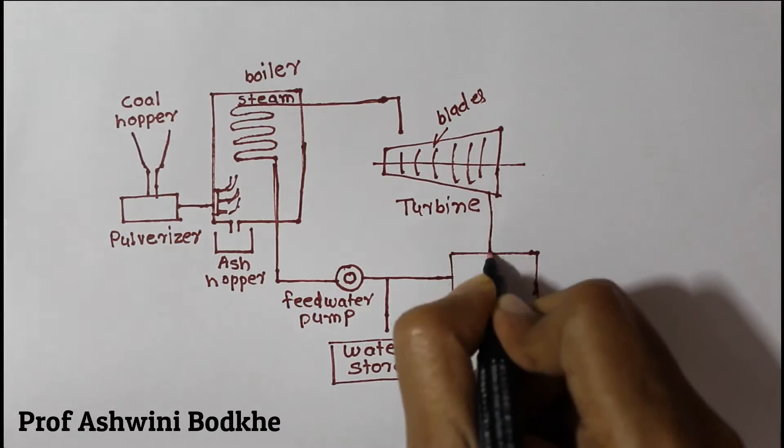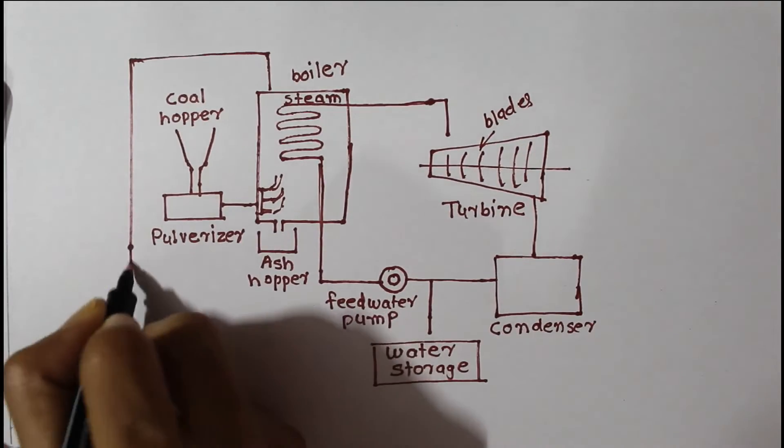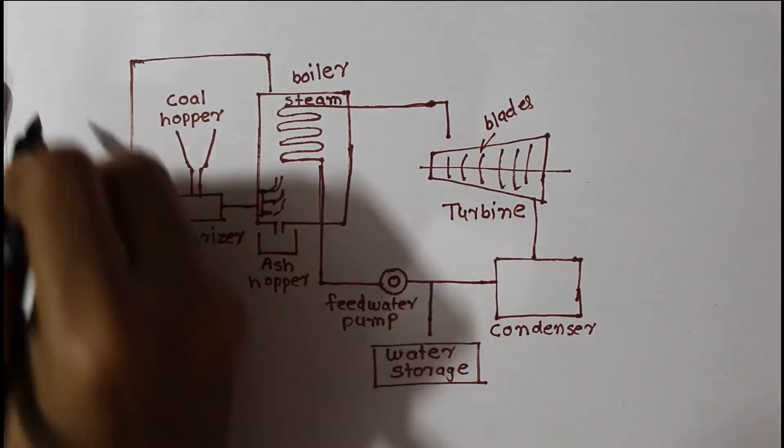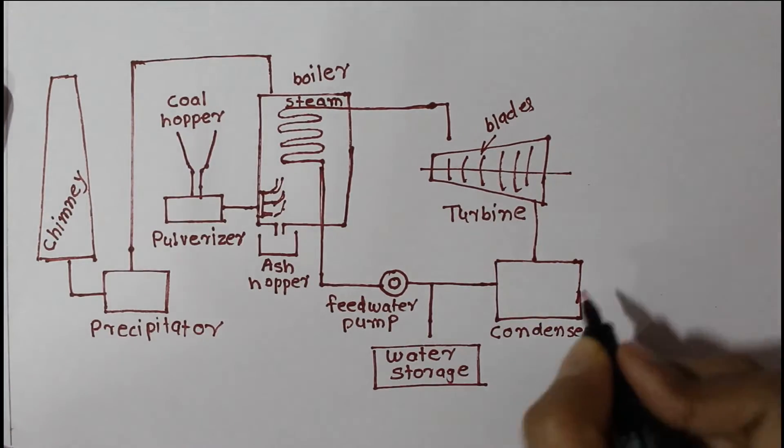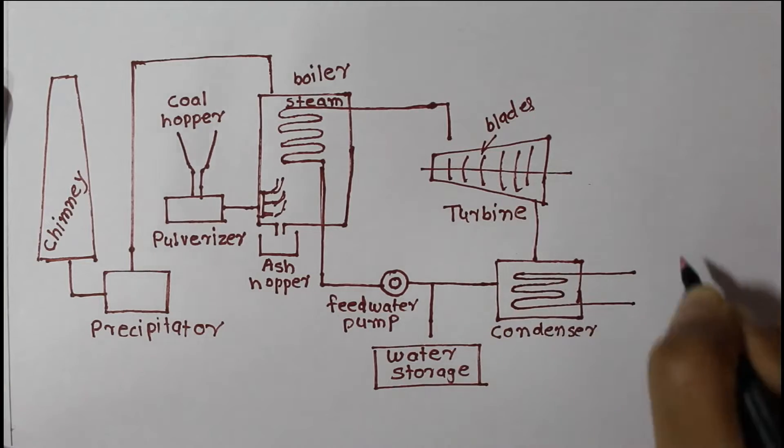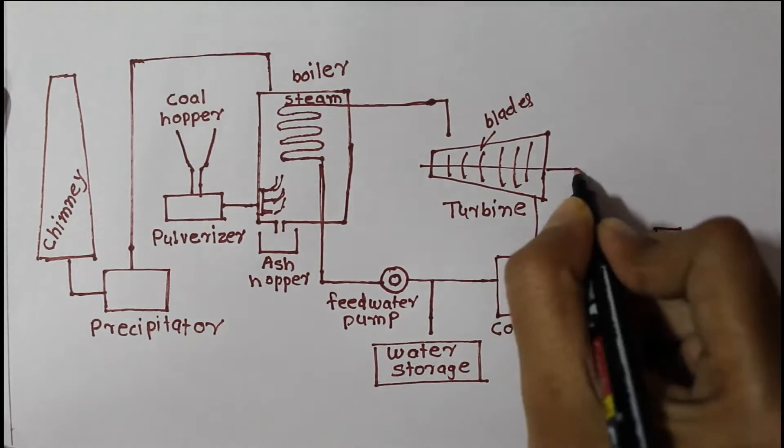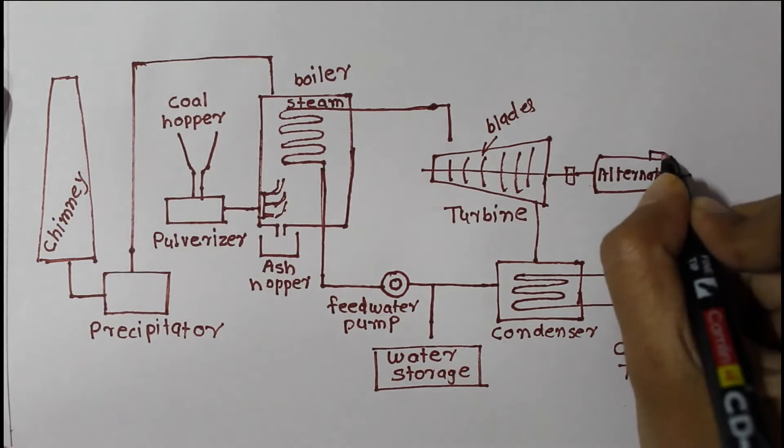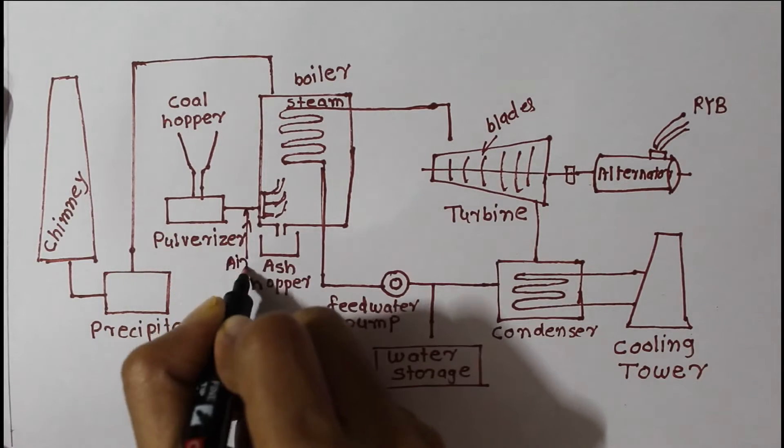Steam produced in boiler due to coal and water. Condenser here, precipitator and chimney. A chimney is structure for ventilating hot fuel gases from a boiler. This one is condenser to condense water and cooling tower to cool water. And this one is alternator and electricity.